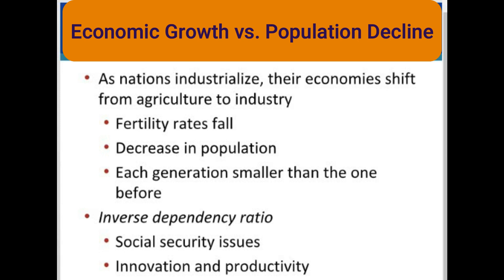If productivity does not keep up with the fall of the inverse dependency ratio, some economists believe that living standards will have to decline. The place where this problem will show up first is Social Security. There may also be less innovation and slower productivity growth. Other economists are more hopeful and believe that productivity growth and living standards could keep on rising at the rates we have come to expect.